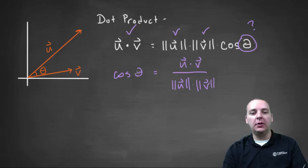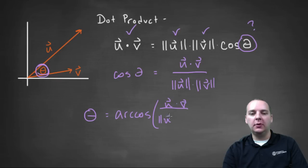And then if you wanted to know the angle between two vectors, you would just take the arc cosine, or the inverse cosine of both sides, and so we'd get arc cosine of u dot v divided by the magnitude of u times the magnitude of v.